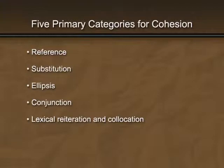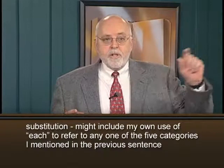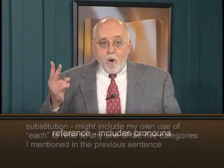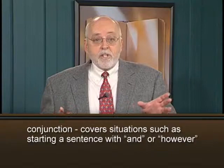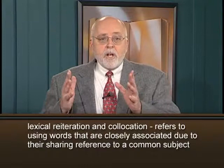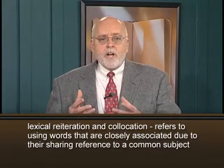Their five primary categories for cohesion are reference, substitution, ellipsis, conjunction, and lexical reiteration and collocation. I won't try to give more than a brief indication of each, but substitution, for example, might include my own use of 'each' to refer to any one of the five categories I mentioned in the previous sentence. Reference includes pronouns; conjunction covers situations such as starting a sentence with 'and' or 'however'; and lexical reiteration and collocation refers to using words closely associated due to their sharing reference to a common subject, as we might see in words all having something to do with, say, fires, flames, or burning.